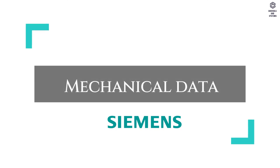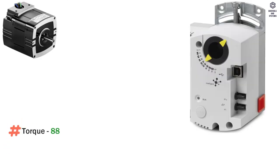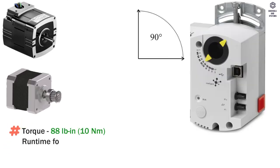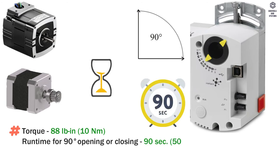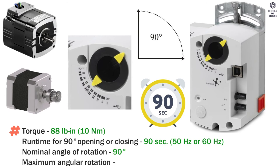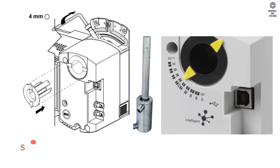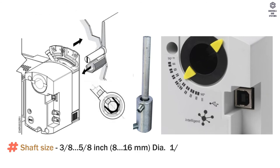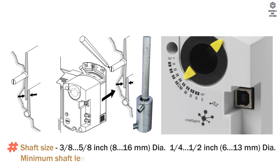Mechanical data: motor torque is 10 Newton meters. Runtime for 90-degree opening or closing is 90 seconds. Nominal angle of rotation is 90 degrees. Maximum angular rotation is 95 degrees. Shaft size is 8 to 16 mm and 6 to 13 mm. Minimum shaft length is 20 mm.